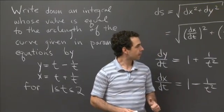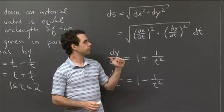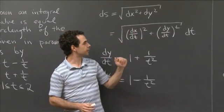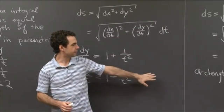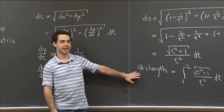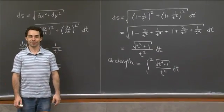OK. And yes, arc length. This is how we do arc length in parametric form. Works out pretty nice, except in this case we get an integral we can't evaluate at the very end. Too bad. All right. I'll leave it with that.